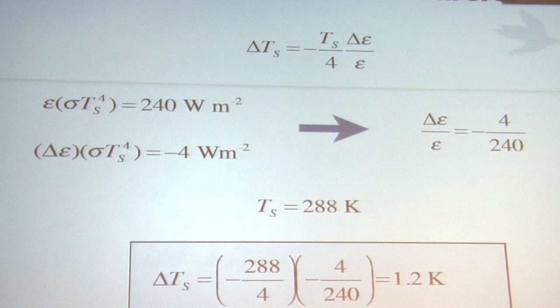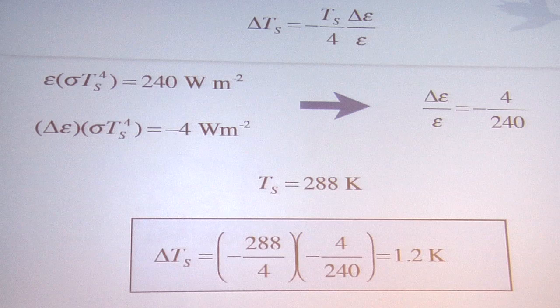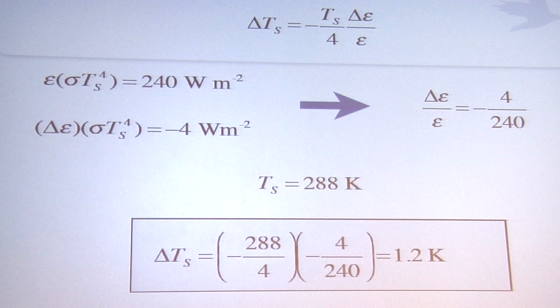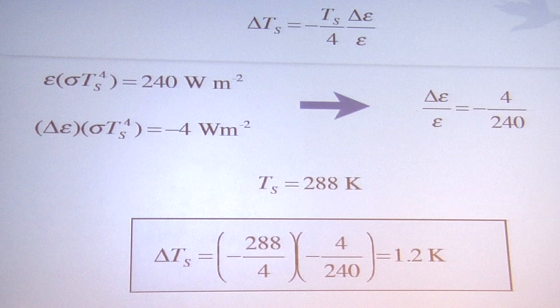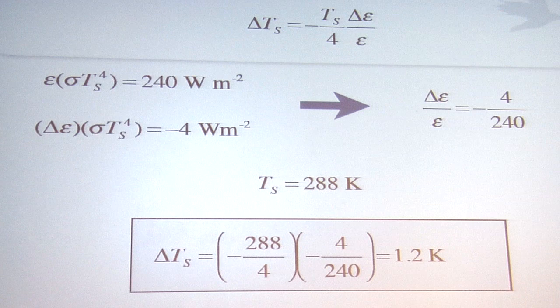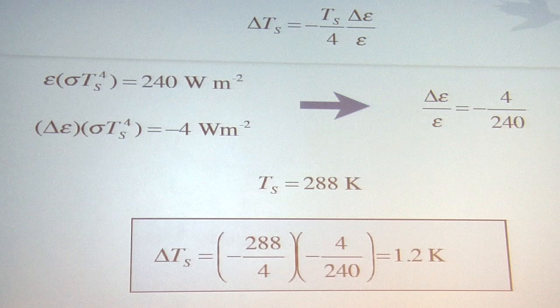This is not complicated — you can fit this on the back of a business card. The change in the emissivity — the perturbation of the radiation budget — is about 2%: 4 watts per square meter out of 240. The change in the temperature is about half a percent: 1.2 out of 288. There's nothing crazy about that. It would be surprising if you changed the radiation budget by 2% and didn't get something.